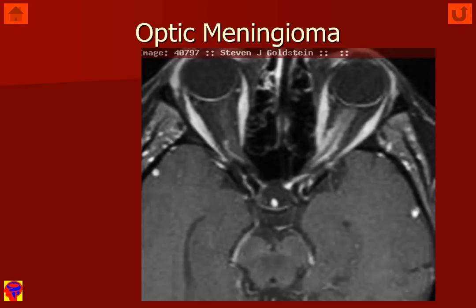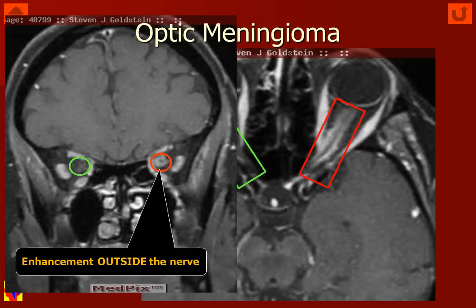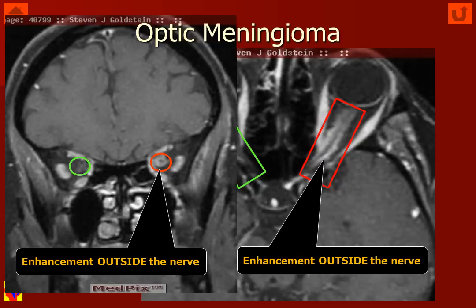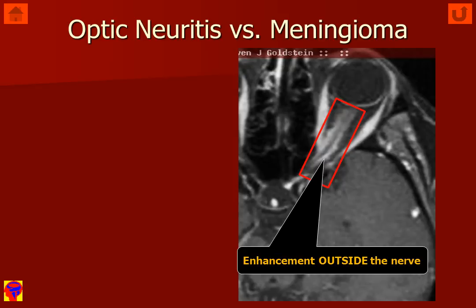In another case of optic nerve sheath meningioma, the green rectangle demonstrates the normal lack of enhancement of the optic nerve in the patient's right orbit. However, in the left orbit inside the red rectangle, we see peripheral, somewhat nodular enhancement around the outside of the non-enhancing optic nerve in the center. In the coronal image, we can see a ring of enhancement surrounding a non-enhancing optic nerve. Terms used to describe this appearance include a target sign or bullseye sign for the coronal pattern, and a tram-track or railroad-track sign for the axial images in optic nerve sheath meningioma.